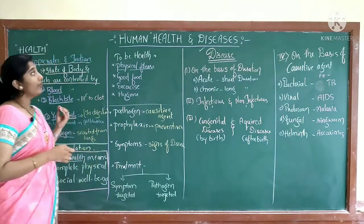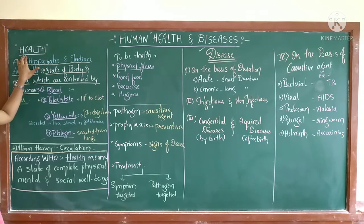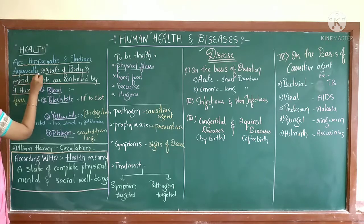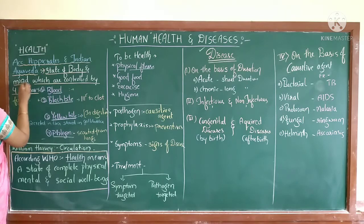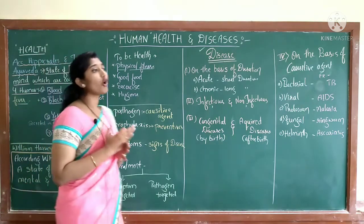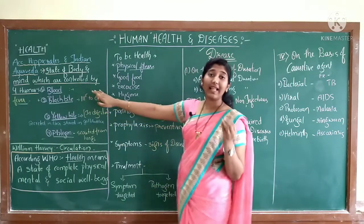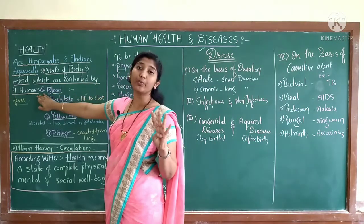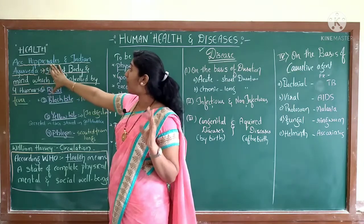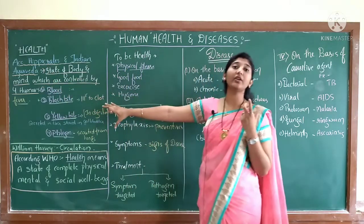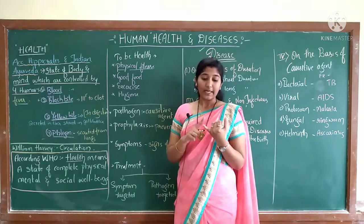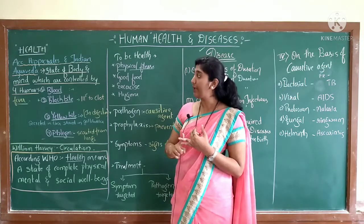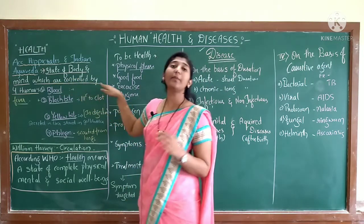When we talk about health in the early days, in the ancient period, according to Hippocrates and Indian Ayurveda, health was nothing but a state of body and mind. It is just the state of body and mind, and health was decided mainly by four humors. According to Hippocrates and ancient Indian Ayurveda, health is simply defined as a state of mind and body which is controlled by four humors.